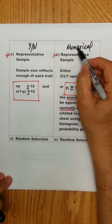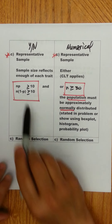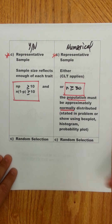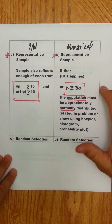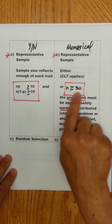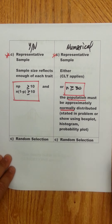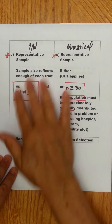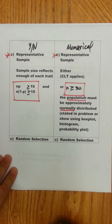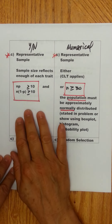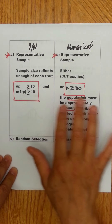For a yes-no trait, you have to show 10 yeses and 10 noes occurring in your sample for that sample size. For a numerical trait, you either have to have a sample size of 30 or more — our book states 30, some books state 25, so you've got to be in that ballpark — or you have to know the population is normally distributed. This is really the only condition in which they differ. This is called success-failure, or central limit.